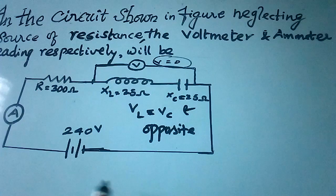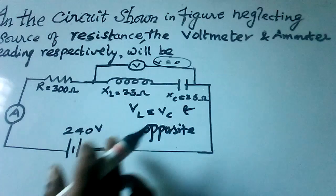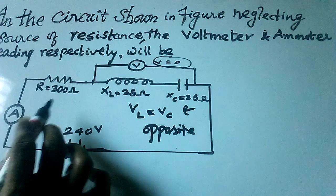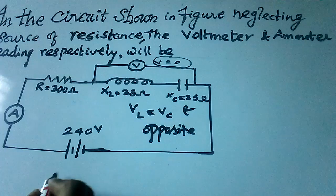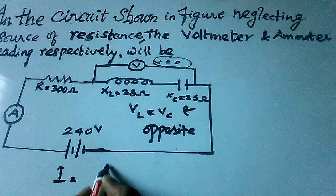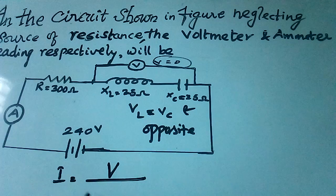Now we have to find the current flowing through the ammeter, because ammeter measures the current flow through the entire circuit. So current I equals V divided by square root of R squared plus (XL minus XC) the whole squared.